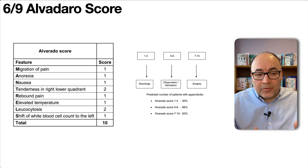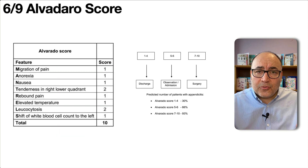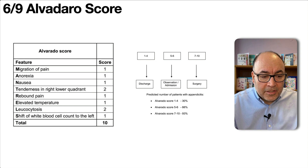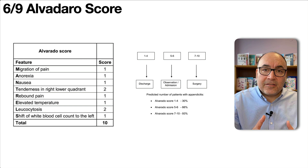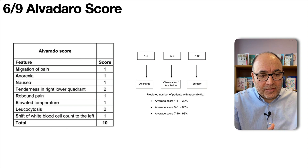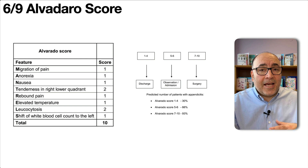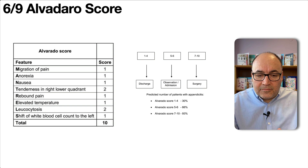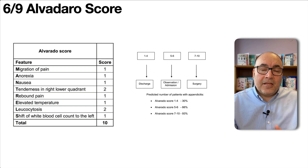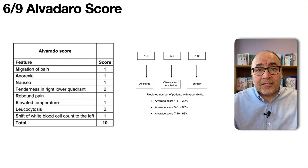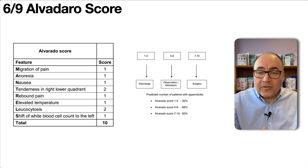As part of your diagnostic workup you can also use the Alvarado score. Many people don't formally use it but it's a useful guide. There are about eight parameters pointing to a diagnosis of appendicitis, each given a score — most are one point except for leukocytosis and tenderness over McBurney's point. A score of seven to ten suggests the diagnosis is likely and operation is probably indicated; five to eight is a grey zone where you admit and observe; a very low score means you can potentially discharge the patient.